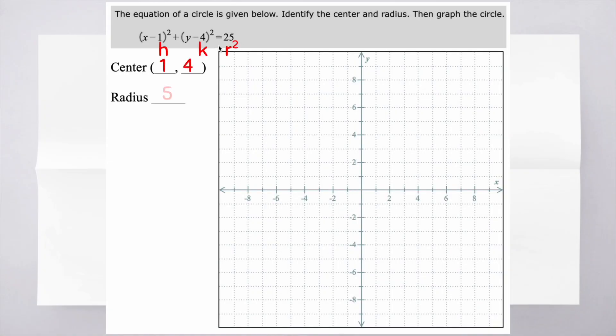Because this is r squared, I take the square root and my radius is 5. So now I go center (1,4). And then the radius, I can measure out in any direction 5 units. So you can see I did it in all 4 directions. You really only need to do 1.